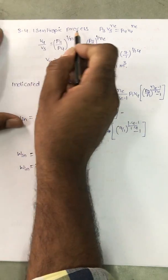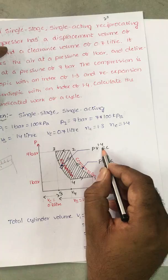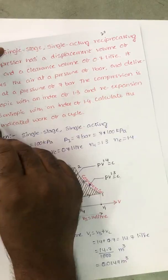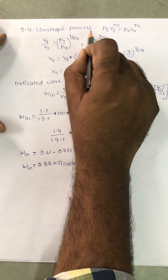Process 3-2-4 is the isentropic process. PV power 1.4 is equal to constant. We clearly mentioned the re-expansion is isentropic. Compression is polytropic, PV power 1.3 is equal to constant.